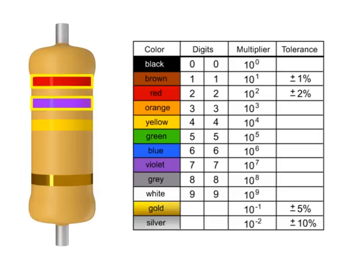In a 4-band resistor, the first two bands represent the digits or significant figures. The third band indicates the multiplier, and the fourth band indicates the tolerance.